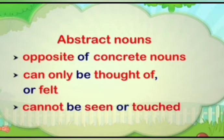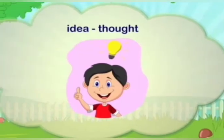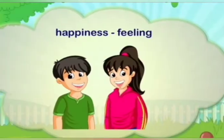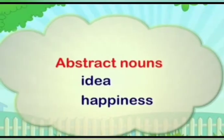Let's see some examples, children. An idea is a thought. Happiness is a feeling. Idea and happiness are abstract nouns.